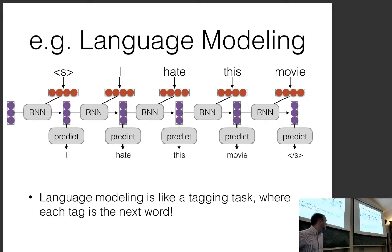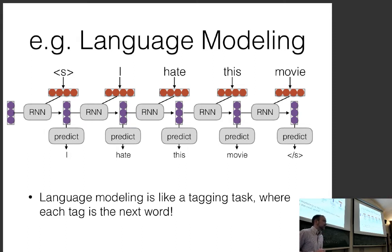What are the implications of this approach? There's one obvious good implication and one perhaps less obvious bad implication. The good thing about using an RNN instead of a feedforward network reading the previous two words: you get unlimited context. What's the bad thing about recurrent neural networks?